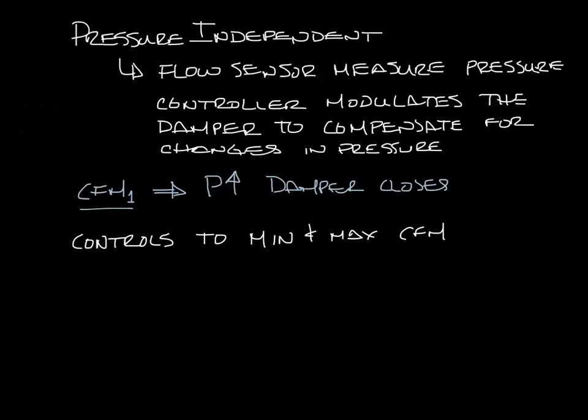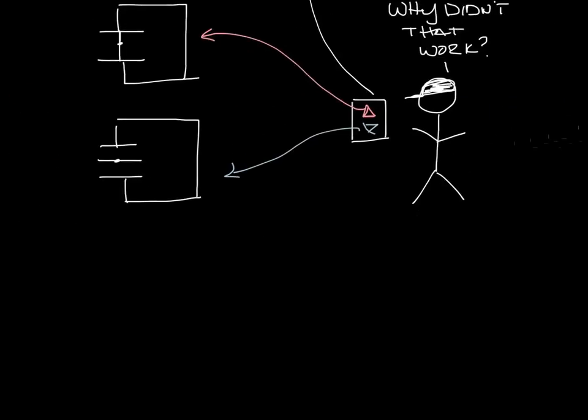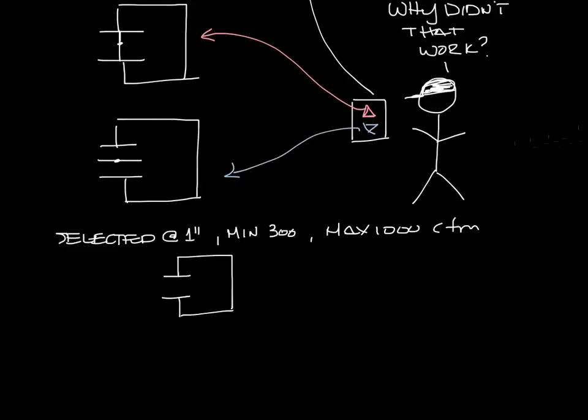So let's go back to our guy in the field. Let's say the VAV box was selected with 1 inch of inlet pressure, a minimum CFM of 300 CFM and a maximum of 1000 CFM. In a perfect world, you'd have 1 inch inlet on the box in the field and you would get your minimum CFM when the damper is almost full closed and you would get your maximum CFM when the damper is almost full open. I'll get to why it's almost full open in a minute.